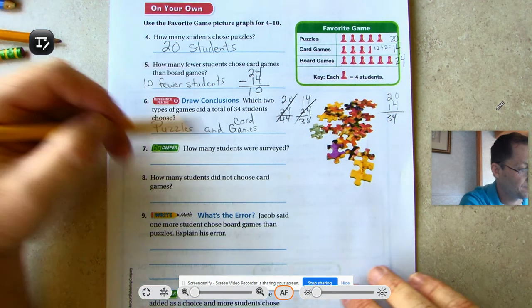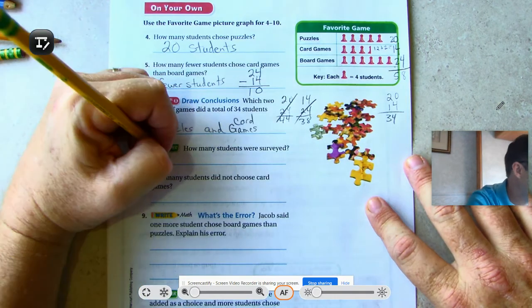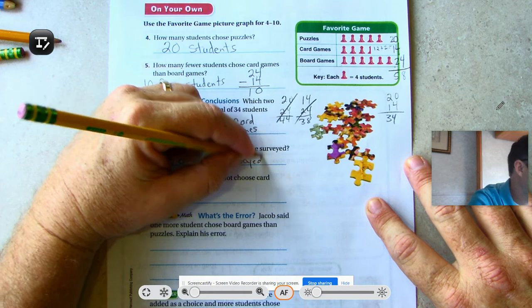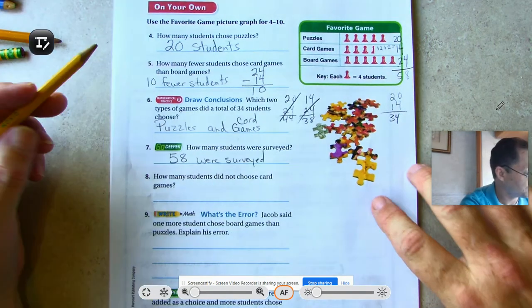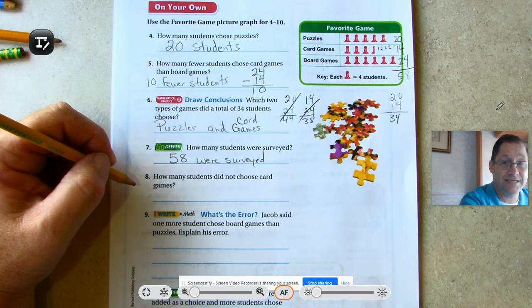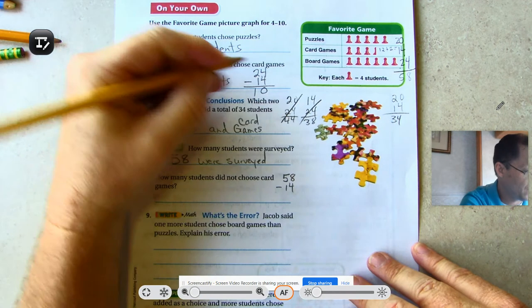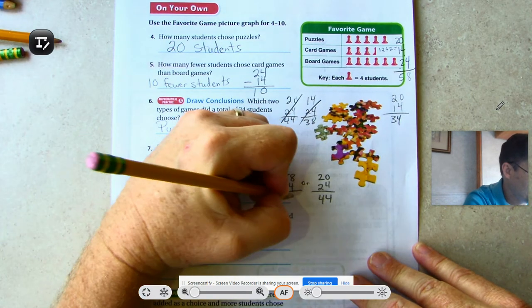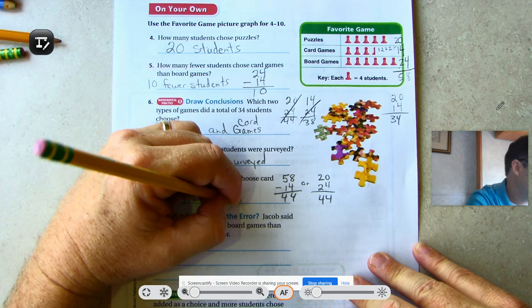How many students were surveyed? 4 and 4 is 8, plus 2, 4, 5. Fifty-eight students. Surveyed basically means ask their opinions. We're just going to add up all the different votes. How many students did not choose card games? 14 students did choose card games. We can go 58 take away 14, or 20 students chose puzzle games, 24 chose board games. So 44 did not choose card games.